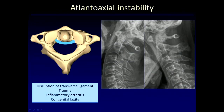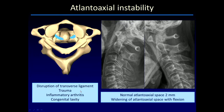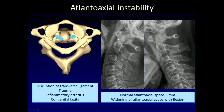Moving down one level, atlantoaxial instability is caused by disruption of the transverse ligament passing from the lateral masses of C1, which holds the odontoid arising from C2 in place abutting the anterior arch. Other than trauma, rheumatoid arthritis is a common cause for atlantoaxial instability, along with other etiologies that produce inflammation in this area. The distance should be measured at the bottom of the C1-C2 space and normally does not exceed 2 millimeters. The flexion radiograph is more sensitive than the neutral or extension radiograph, highlighting the instability of this articulation.